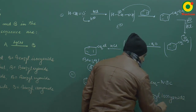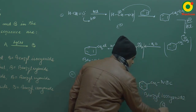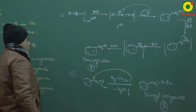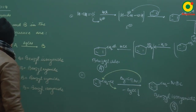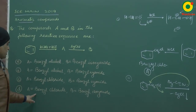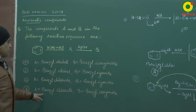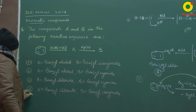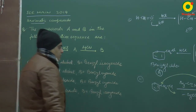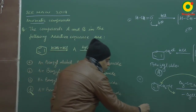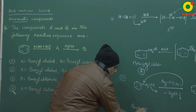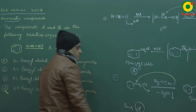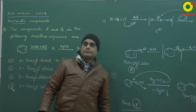इस तरह से हमारा answer हुआ: A = Benzyl chloride और B = Benzyl Isocyanide। यानि कि इस question के लिए हमारा answer है option D।